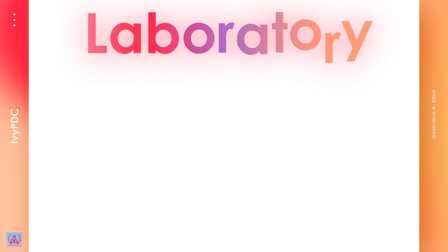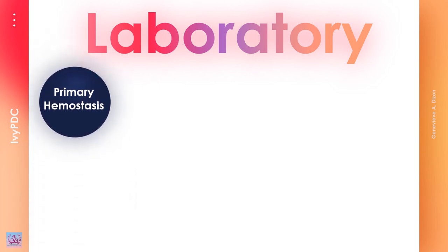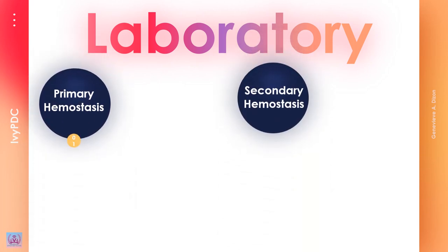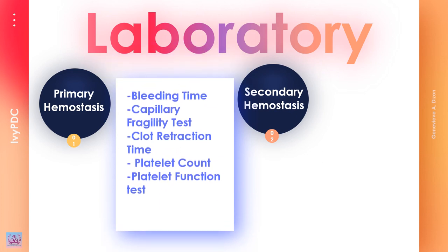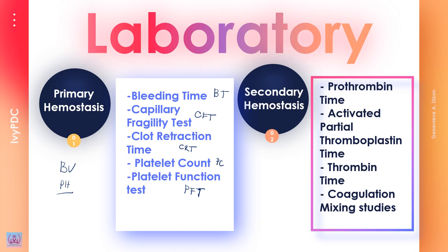Tests used to diagnose hemostasis are divided into two categories. Under primary hemostasis tests we have: bleeding time, capillary fragility test, clot retraction test, platelet count, and platelet function tests — which assess defects in the blood vessels or platelets. Secondary hemostasis tests include prothrombin time, activated partial thromboplastin time, thrombin time, and various coagulation mixing studies, which diagnose problems involving the coagulation factors.